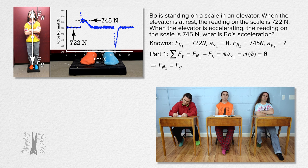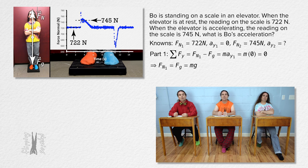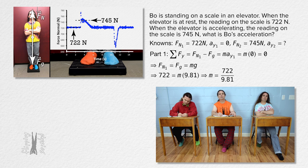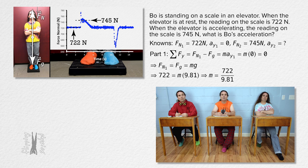The equation for the force of gravity equals mass times acceleration due to gravity. We know numbers for force normal one and acceleration due to gravity, so let's plug in: 722 for force normal one and positive 9.81 for acceleration due to gravity. That means Bo's mass equals 722 over 9.81, or 73.5984 kilograms.